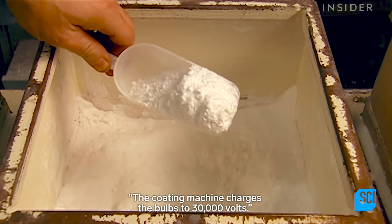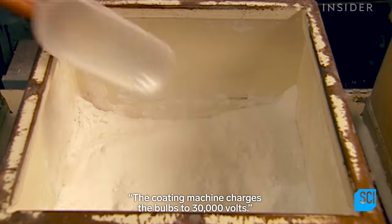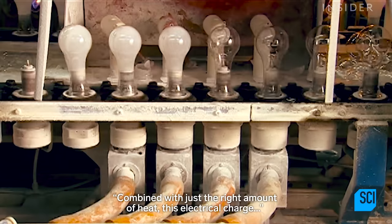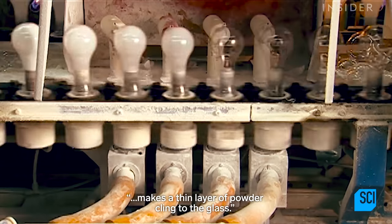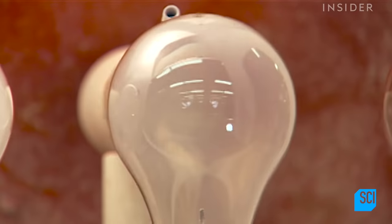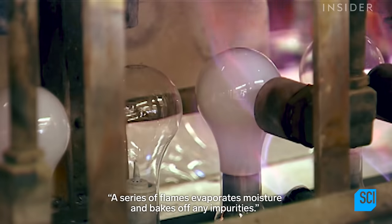The coating machine charges the bulbs to 30,000 volts. Combined with just the right amount of heat, this electrical charge makes a thin layer of powder cling to the glass. A series of flames evaporates moisture and bakes off any impurities.